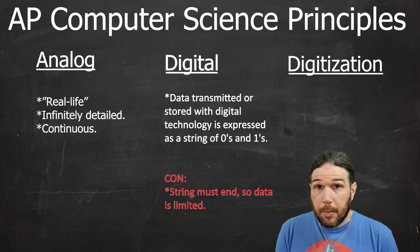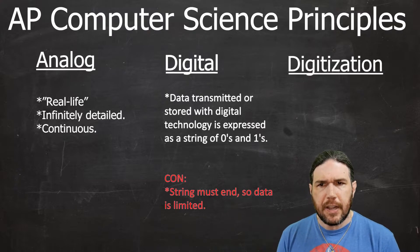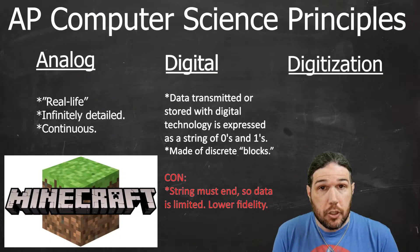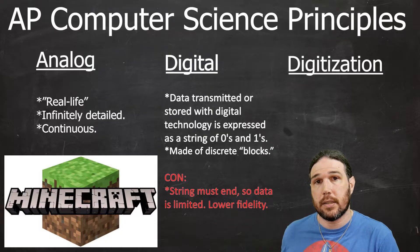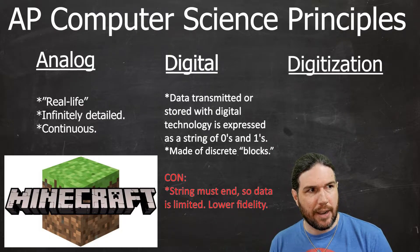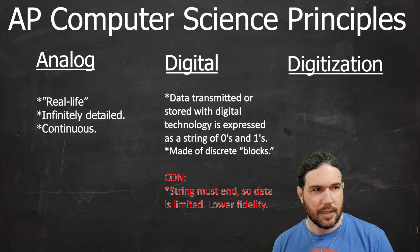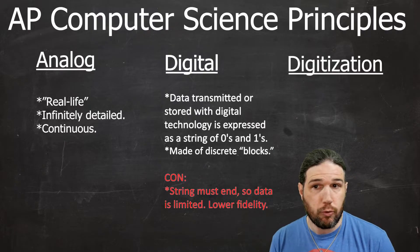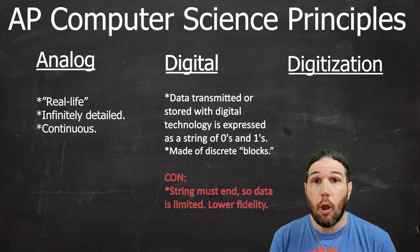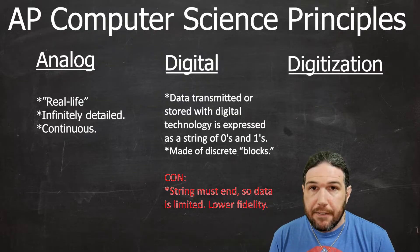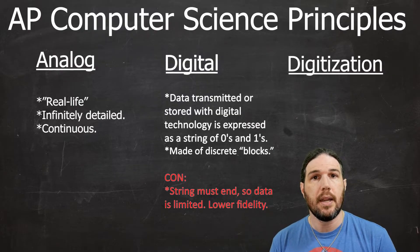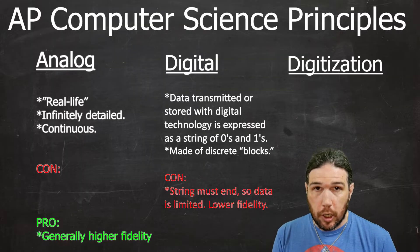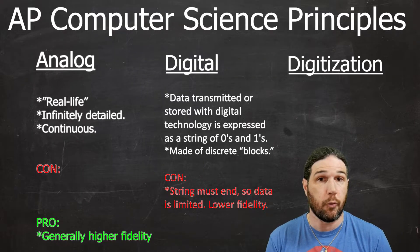Digital media is an approximation of real life. It's kind of like Minecraft — there's a finite amount of space, and it's chopped up into distinct blocks. This is why analog media, like vinyl records, are still considered to be overall higher quality than even the best digital recordings. They say it has higher fidelity, which means it's closer to what it sounded like in real life.